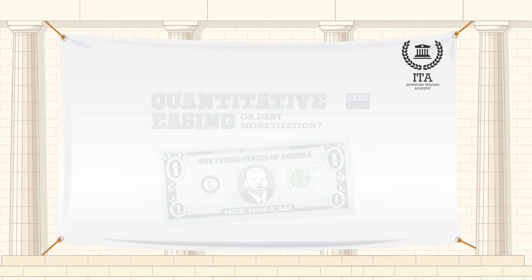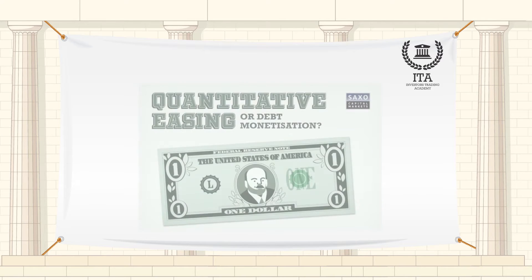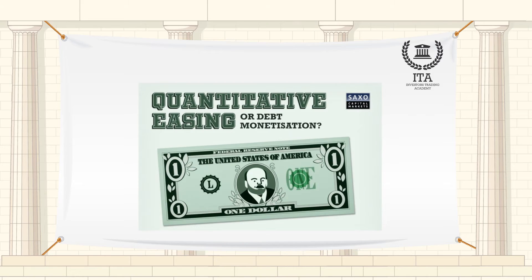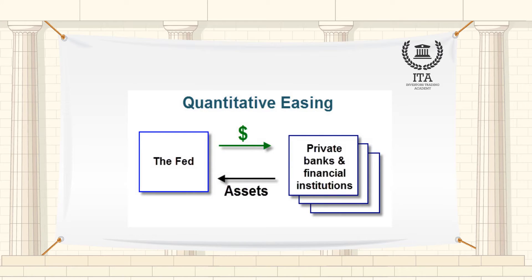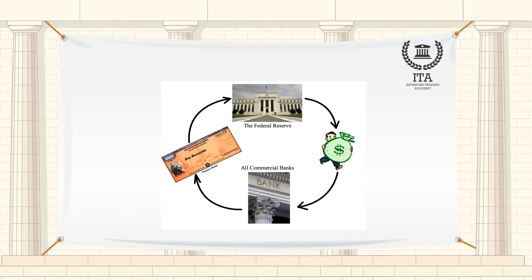Quantitative easing, also known as QE, is an unconventional form of monetary policy where a central bank creates new money electronically to buy financial assets like government bonds. This process aims to directly increase private sector spending in the economy and return inflation to target.